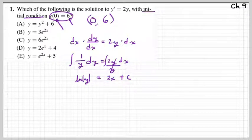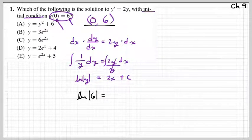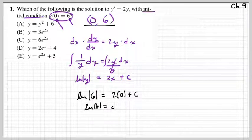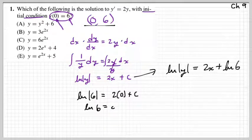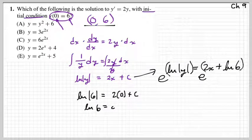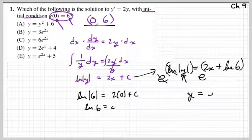Now we plug in our point to get rid of C, then solve for y. Plugging in x = 0 and y = 6: natural log of 6 equals 2 times 0 plus C, so C equals natural log of 6 — we don't need absolute value bars since 6 is already positive. Going back to the original equation, we now have natural log of |y| equals 2x plus natural log of 6. To get y out of the natural log, we raise both sides to the base e, and e to a natural log power leaves whatever is inside.